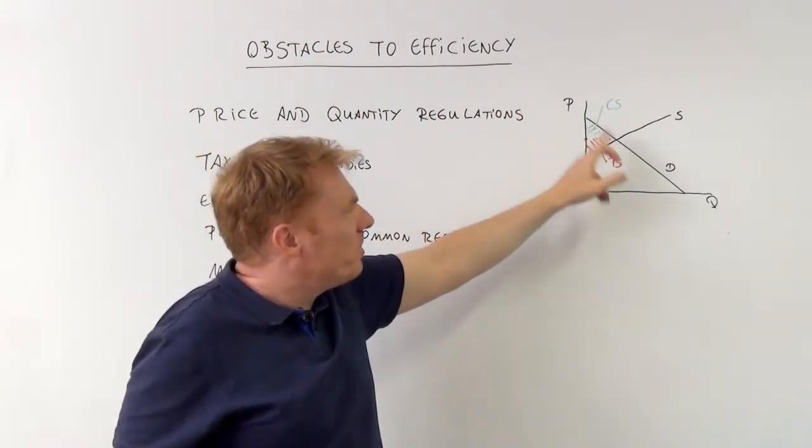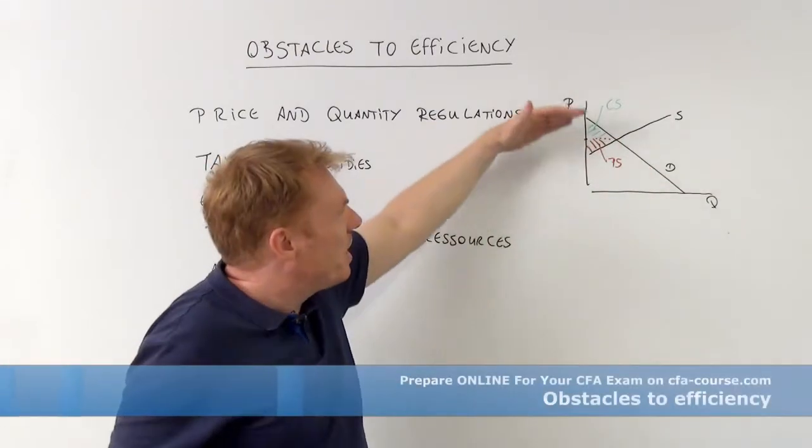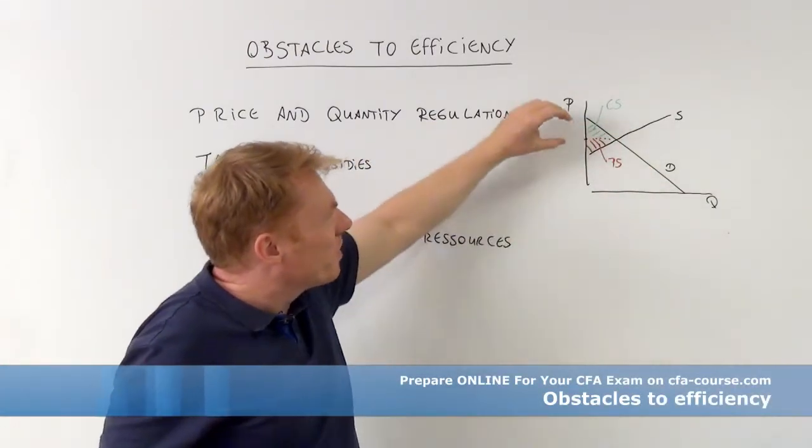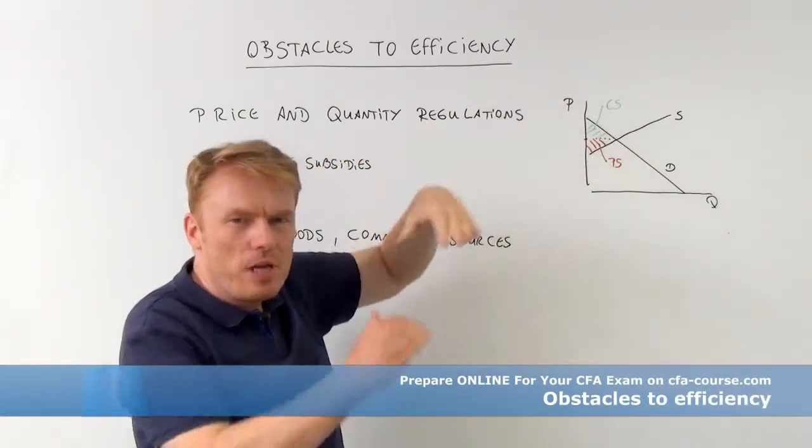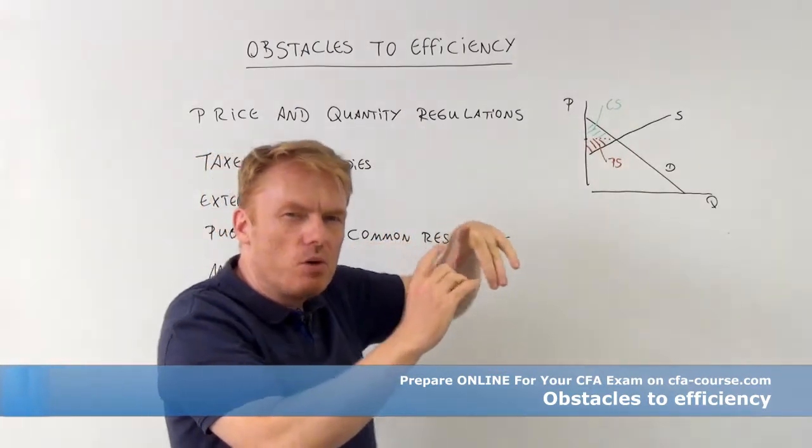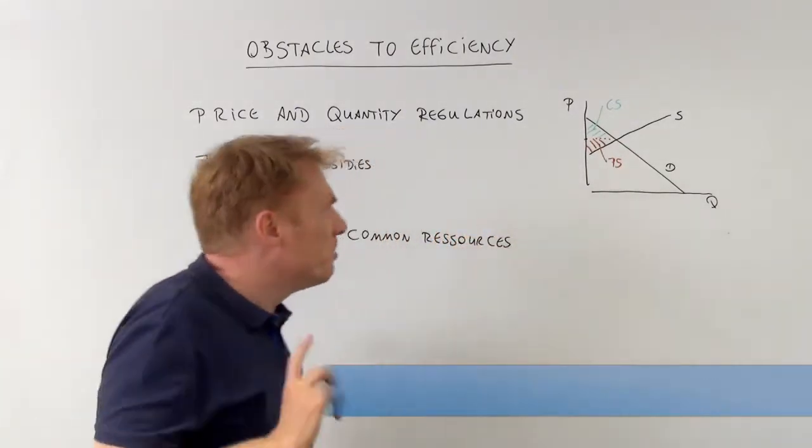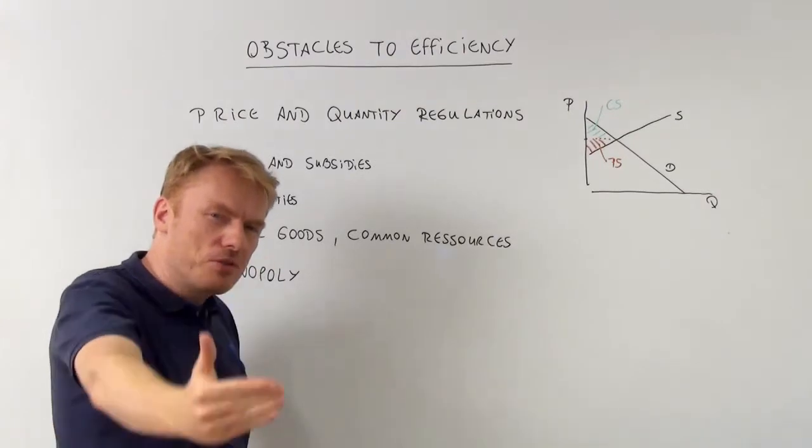So as you can see here, the demand function and the supply function, and we have different areas. So there is a maximum consumer surplus and a maximum producer surplus,